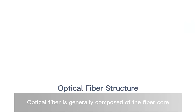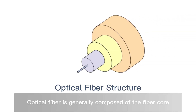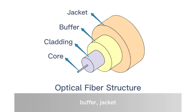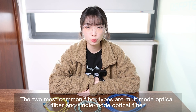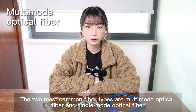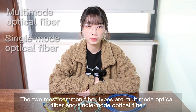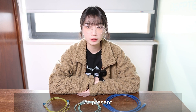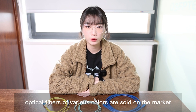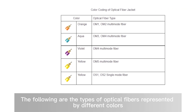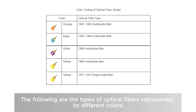What's optic fiber? Optic fiber is generally composed of a fiber core, cladding layer, buffer, jacket, and fiber optic connectors. The two most common fiber types are multi-mode optic fiber and single-mode optic fiber. At present, optic fibers of various colors are sold on the market, with different types represented by different colors.